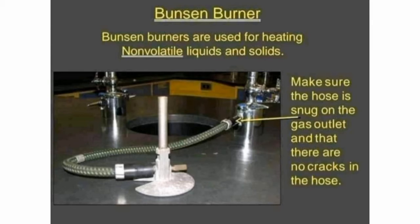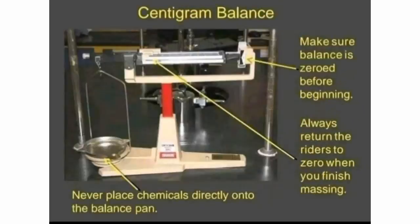Next is the centigram balance. As the name suggests, it can measure things in centigrams. The first step is to ensure the balance is at zero before beginning. Once you place solids on the balance pan, always return the riders to zero when you finish measuring, and never place chemicals directly onto the balance pan.